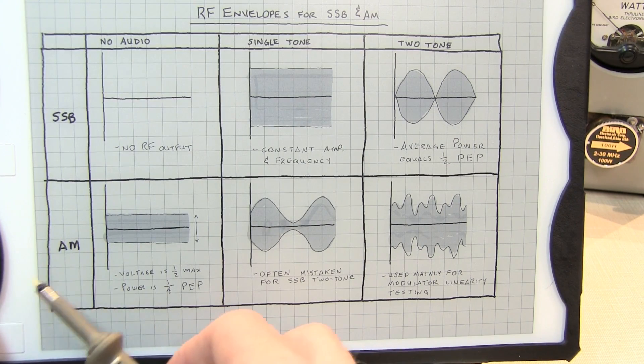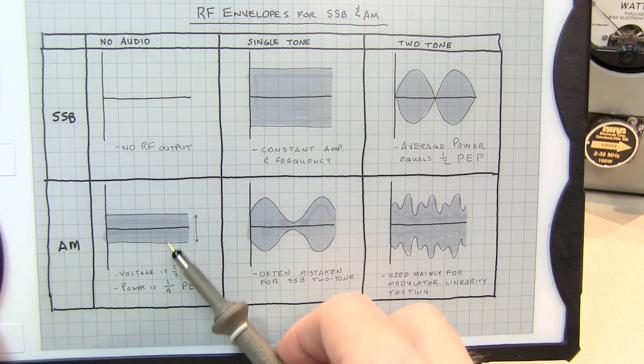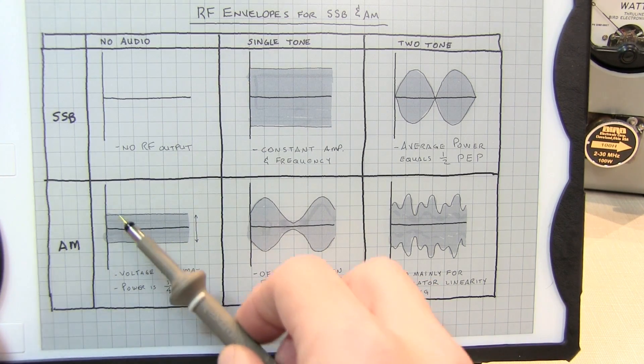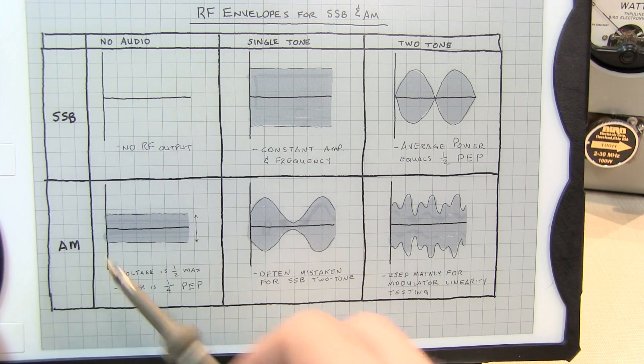Starting off with AM, without any audio input, and you just key up the mic, you essentially get an RF carrier. And then as you modulate, the amplitude of that carrier is varied up and down, hence the name amplitude modulation.